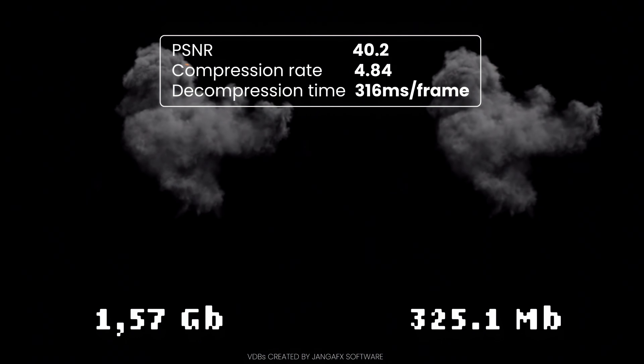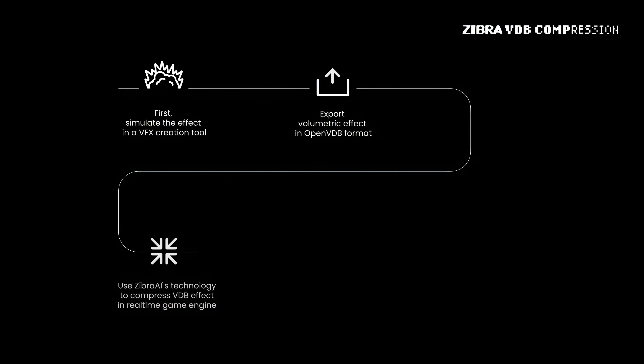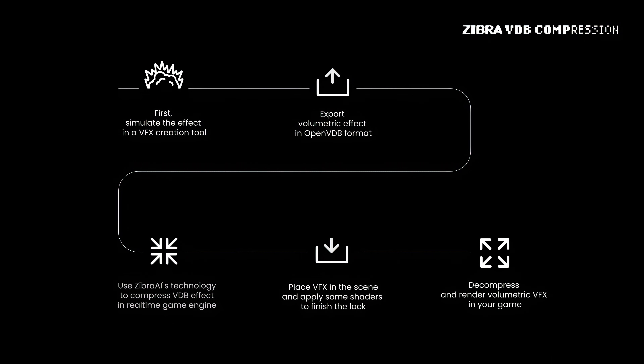Here is all you need to empower your game with volumetric VFX: first, simulate the effect in a VFX creation tool; then export the volumetric effect in OpenVDB format; after that, use Zebra AI's technology to compress the VDB effect; in your real-time game engine, place the VFX in the scene and apply some shaders to finish the look. Now you can decompress and render volumetric VFX in your game. If you are interested in our tech, join the waitlist and be the first to get Zebra VDB Compression for your project — more info is in the description box below.